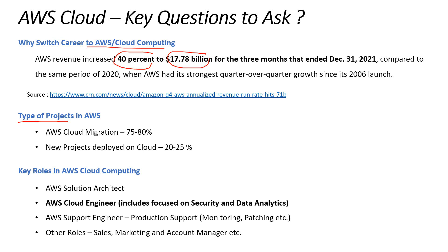What are the kinds of projects that you see in AWS? Basically there are two. One is AWS cloud migration, where organizations are trying to exit their data center and move to AWS cloud — there could be thousands of servers and applications being moved, so this is a huge opportunity. The second is developing new projects that are deployed in the cloud.